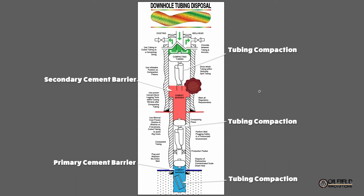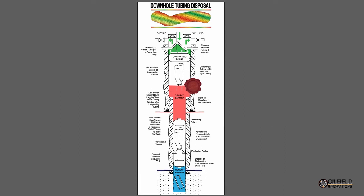This allows you to place the second red cement barrier after you've logged the primary cementation. After placing the second cement plug isolation barrier, shown in red, you can repeat the process of compacting tubing using a compacting piston, using fluid pumped through the existing well head. A normal inflatable packer can be used as a compaction piston with fluid pumped through the well head tubing with the annulus valve closed to build pressure within the casing and push the compaction piston.